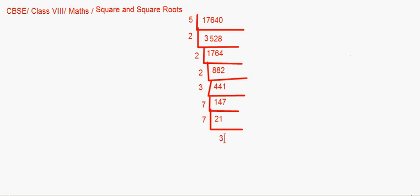Now let's start pairing the factors. The 2s have a pair, the 7s have a pair, and two of the 3s can be paired — but there is one 5 and one 2 left without partners. Since some factors are left unpaired, 17640 is not a perfect square.